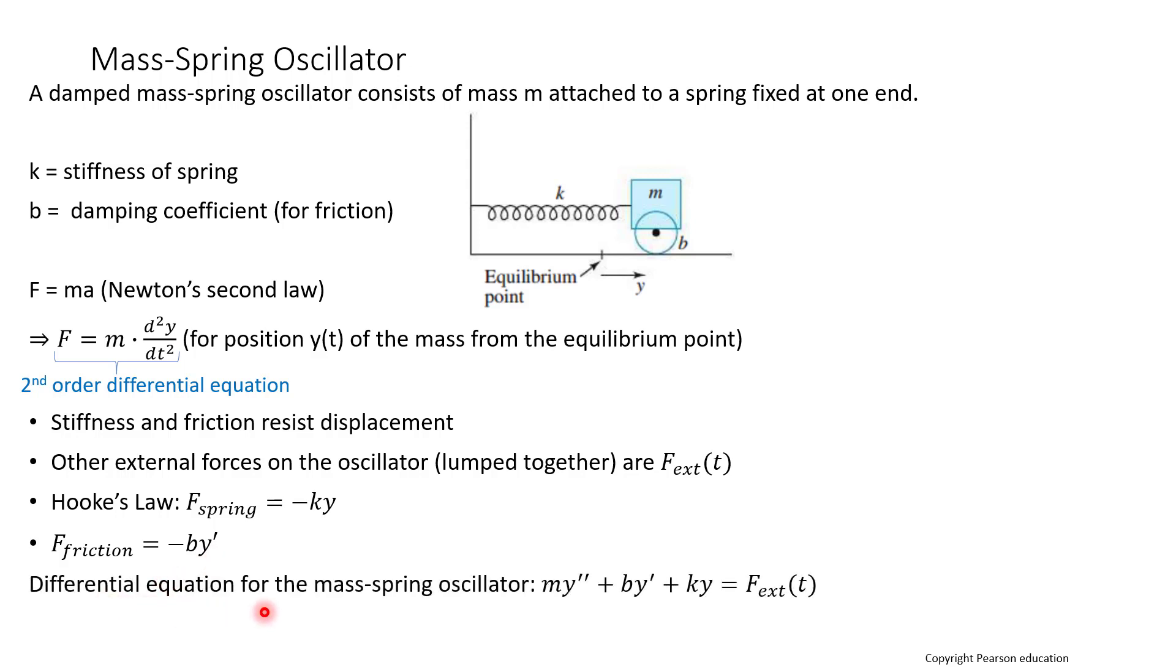So our differential equation for the mass spring oscillator has this form here, where we have our mass times the second derivative of y plus b our damping coefficient times the first derivative of y plus k our stiffness times y equals our external forces. And so this is the inertia, the damping, and the stiffness. The note: no friction or external forces implies that you actually are working with perpetual motion.